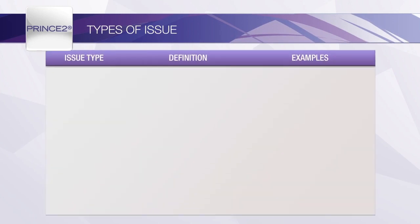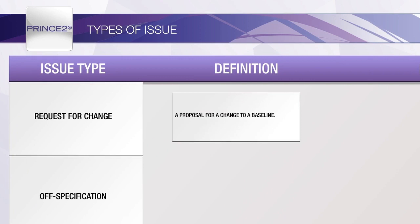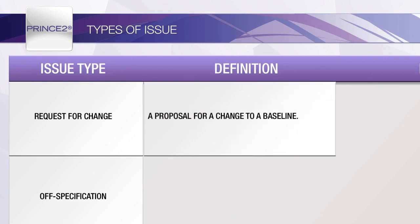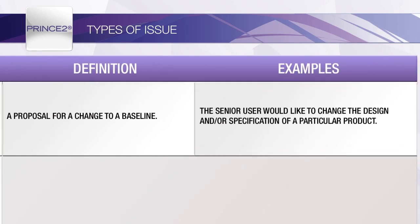There are three types of issue that will be used by the Project Manager: a Request for Change, an Off Specification and a Problem or Concern. A Request for Change will usually come from the customer or user environment and will affect a change to the agreed acceptance criteria or product description. A Request for Change could also request a change to the scope of the project, like an additional product.